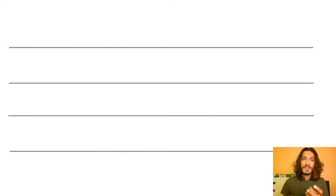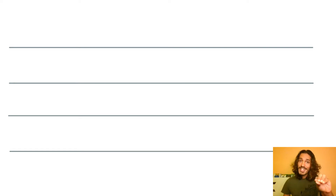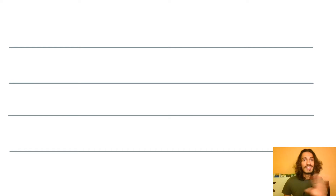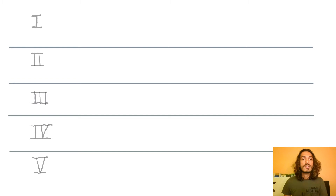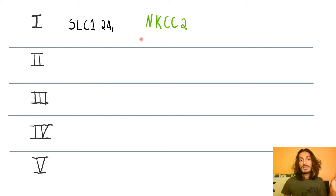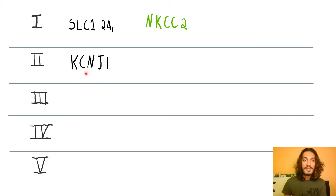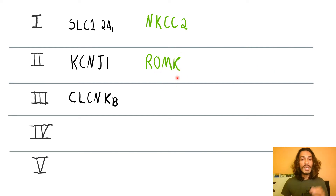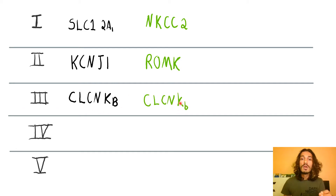Coming to the different types: Bartter syndrome was initially discovered, and that variety was later understood to be just one of several. There are five types as of now. Type 1 is due to a defect in the gene affecting your sodium-potassium-2-chloride channel. Type 2 affects KCNJ, which is a potassium channel, so that affects your renal outer medullary potassium channel. Type 3 affects your chloride channel — specifically ClC-Kb.